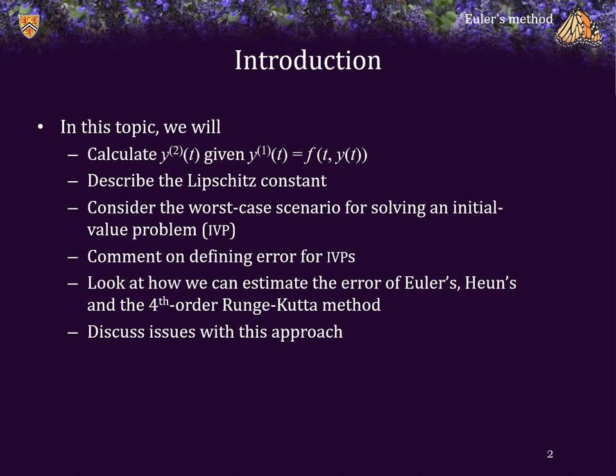In this topic, we will begin by looking at how we can actually calculate the second derivative of the solution given the ordinary differential equation. Following this, we will describe something called the Lipschitz constant. This gives us a worst-case scenario for the solvers of initial value problems, mostly because we are continually approximating solutions with approximations. However, we'll also discuss how this is almost likely to never happen in engineering problems.